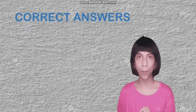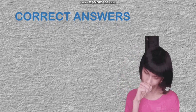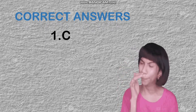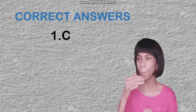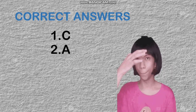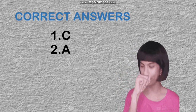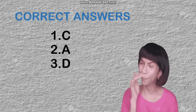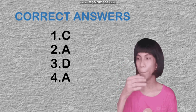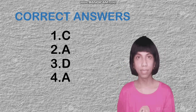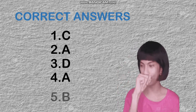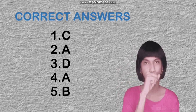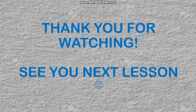Okay, let's check your answers. The correct answers: Number one — C. Number two — A. Number three — D. Number four — A. Number five — B. That would be all for today. Thank you for watching, and see you next lesson.